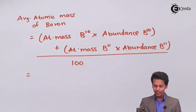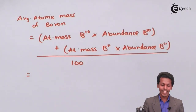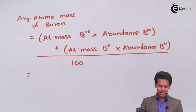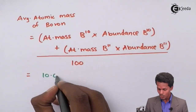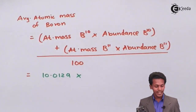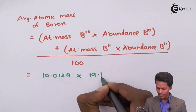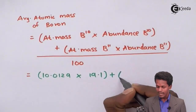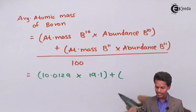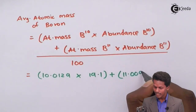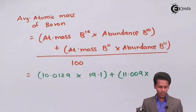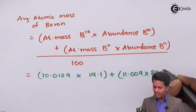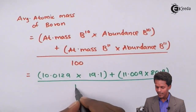Now we substitute the values. The atomic mass of B10 is 10.0129 with an abundance of 19.1%, and the atomic mass of B11 is 11.009 with an abundance of 80.9%. This whole expression is then divided by 100.